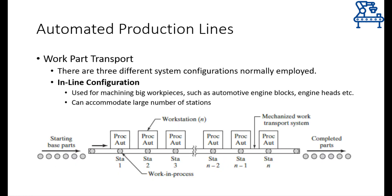Although the purpose of all different configurations of work part transportation systems is the same, depending on the type of products and processing operations, certain configurations prove more beneficial than others. Basically, there are three different configurations in which work part transportation systems may be installed. The first one is the simplest, called the inline configuration. This configuration is used when either the machine tools or individual workstations are quite large in size or number, or the work part to be processed is quite large in size. Moving bulky parts on the production line demands a high amount of energy, which is why simple straight motion is desirable. The schematic shown here describes the general arrangement of machine tools and work transportation system in this configuration.